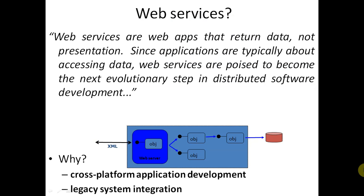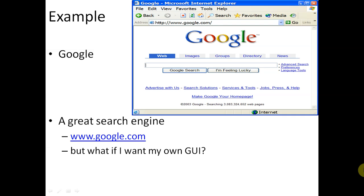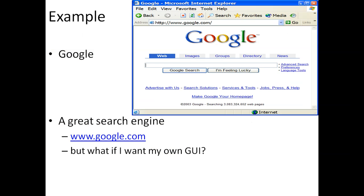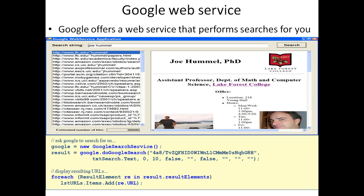I am giving one case study or example of web services. Google is the example — it is one of the biggest and most popular search engines. It is GUI-based and we can also build our own search engine, but that requires lots of programming. Google offers a web service that proposes searches for you — this is an important line. It performs web services to search anything.